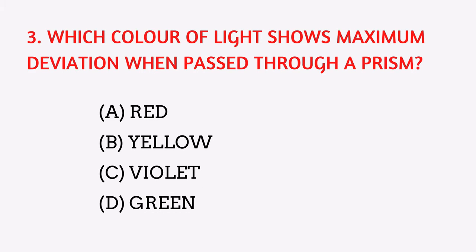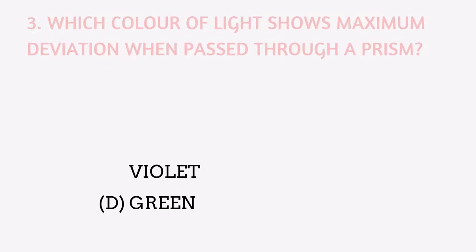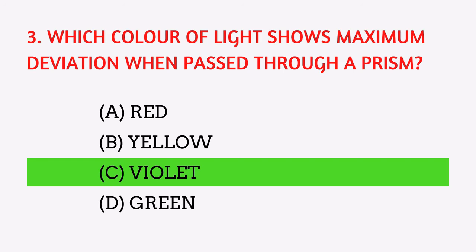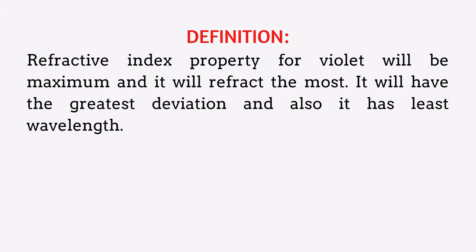Which color of light shows maximum deviation when passed through a prism? The answer is violet. The refractive index for violet light is maximum, so it refracts the most, has the greatest deviation, and also has the least wavelength.